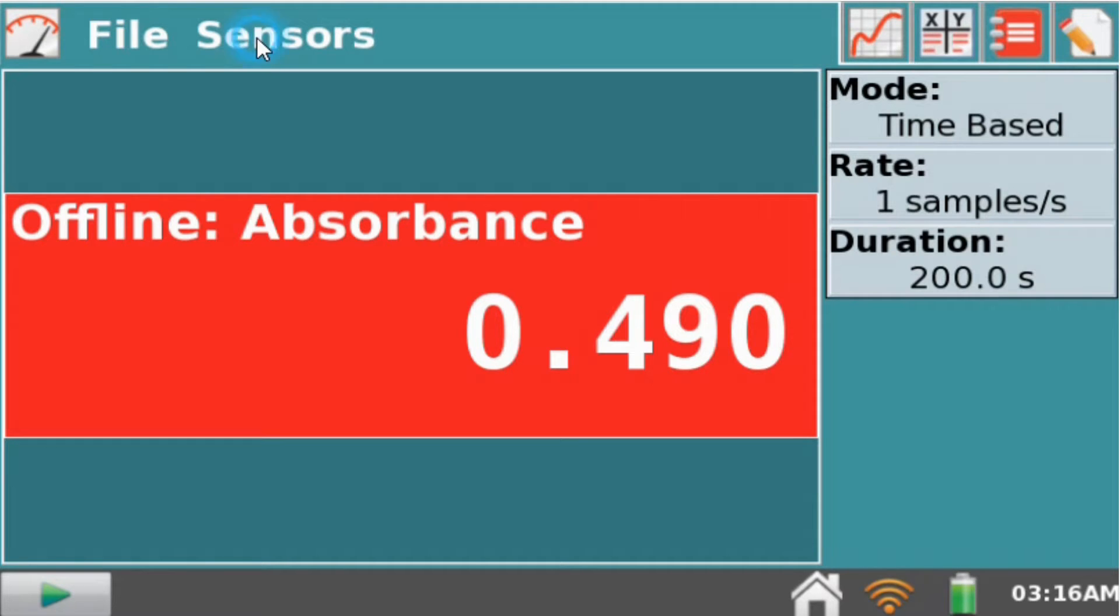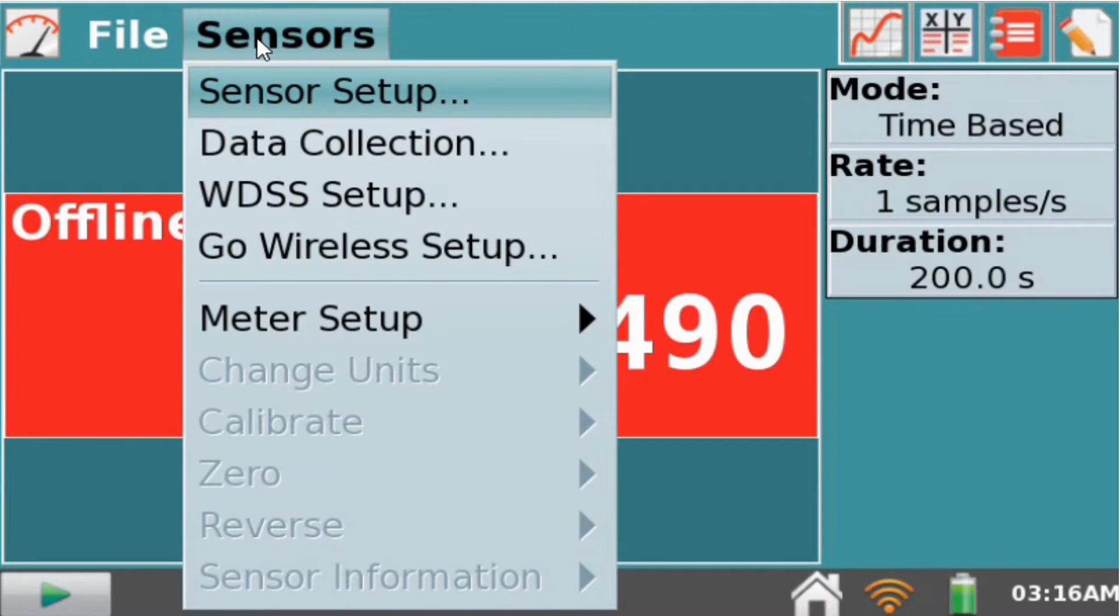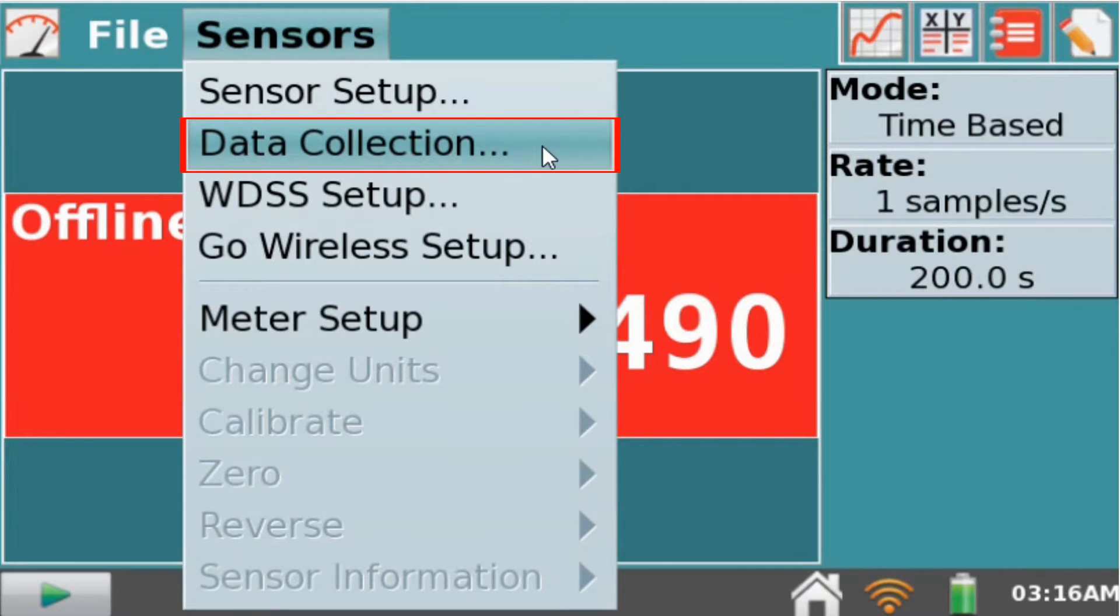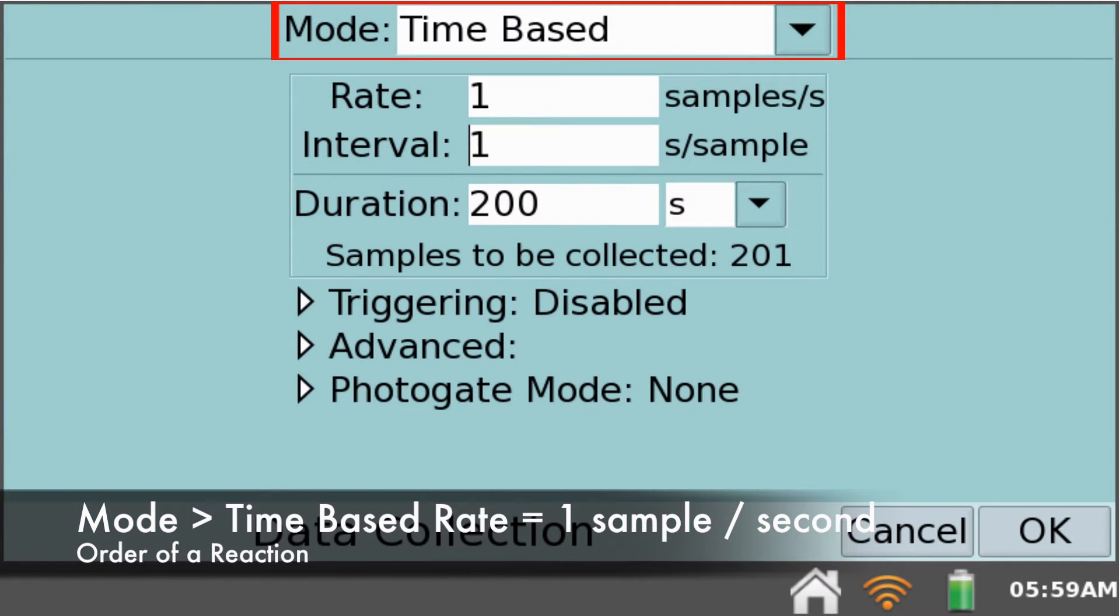Setting up the sensor, in this case the colorimeter. Select sensor, data collection. Choose mode to be time based.